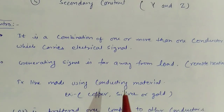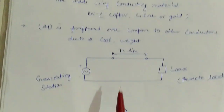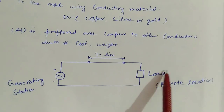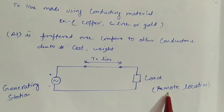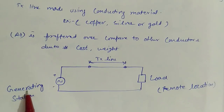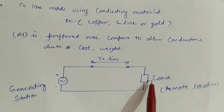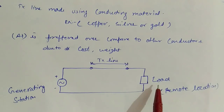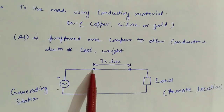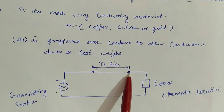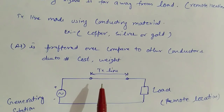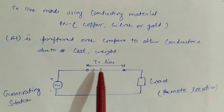As you can see in the diagram, this is the generating station and this side is the load, which is in a remote location. So when we are generating the signal, it is always far away. We need this electrical signal delivered to households or other places. So we need a transmission line to transmit this electrical signal from one point to another. Here we are going to define the properties: transit time effect, primary constants, secondary constants, and the types of transmission lines we can use.